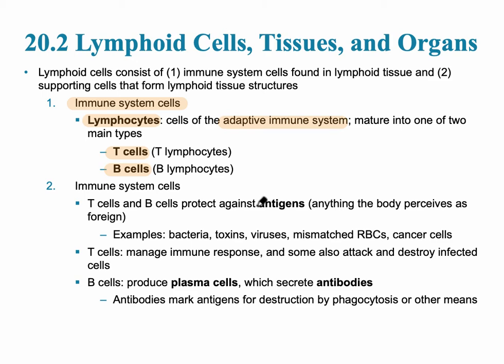What these cells do is they protect against antigens, and antigens are anything that the body perceives as foreign. This also applies to red blood cells — for example, if you are type B, you perceive the A antigens as foreign. Examples of common antigens are bacteria, toxins, viruses, mismatched red blood cells, or cancer cells.